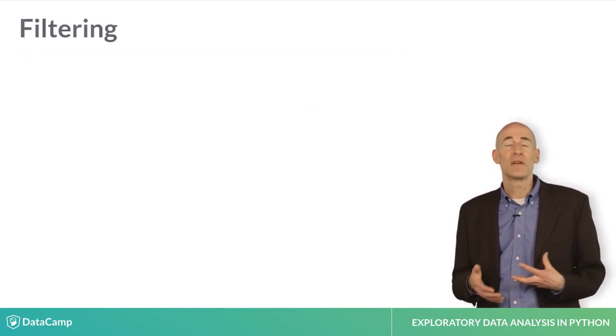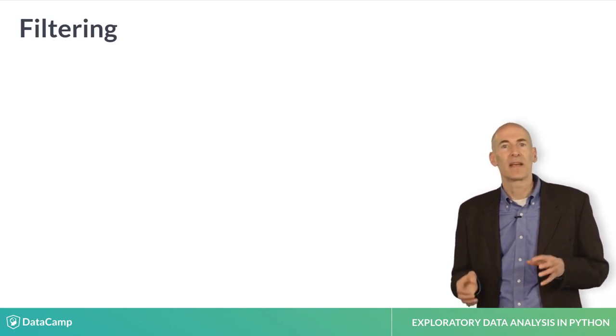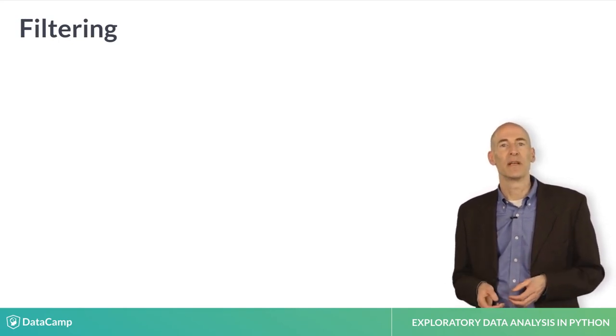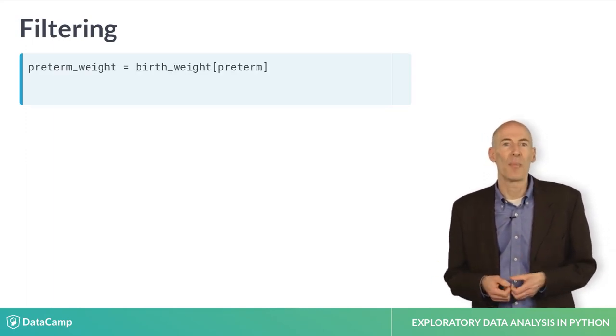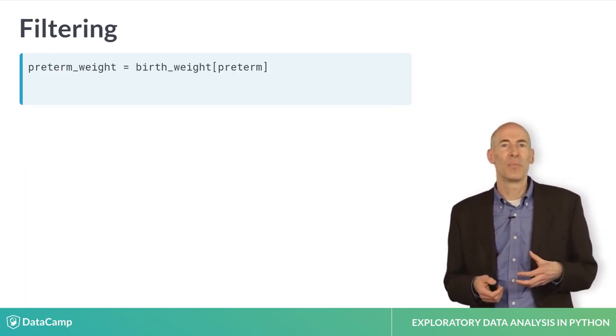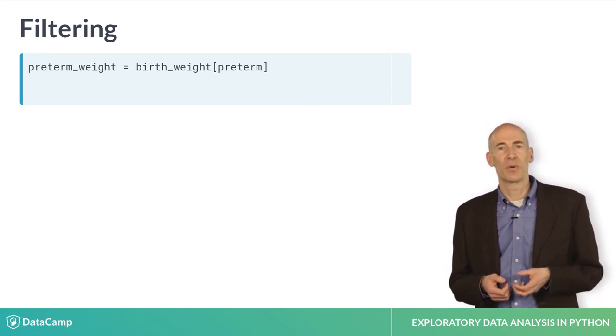We can use a Boolean series as a filter. That is, we can select only rows that satisfy a condition or meet some criterion. For example, we can use preterm and the bracket operator to select values from birth weight. So, preterm weight contains birth weights for preterm babies.